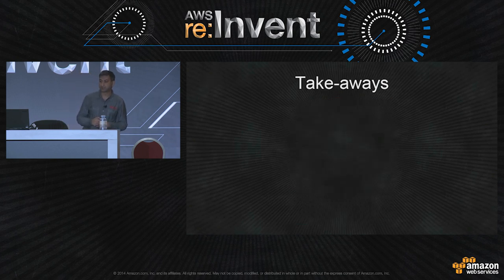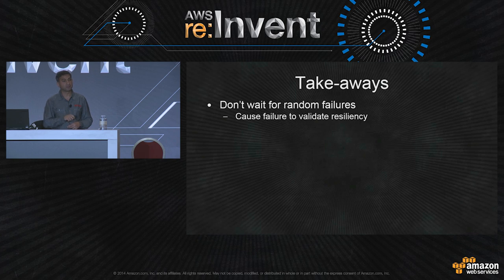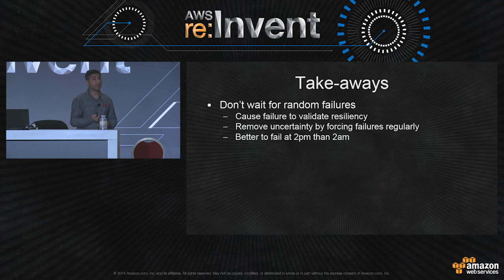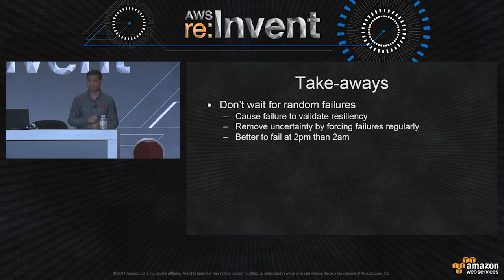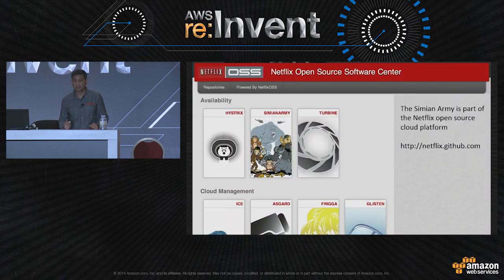What are the key takeaways? You shouldn't wait for random failures — in a distributed system in the cloud, random failures will occur. You should cause these failures to validate resiliency. Remove uncertainty by forcing failures regularly and constantly ensure that your system is resilient. It's better to fail at 2 p.m. rather than 2 a.m. — you don't want an outage at 2 a.m. where you're scrambling to wake everybody up to fix the problem. It's better to have people awake and ready when needed. Always test design assumptions by stressing them. Embrace failure — failure will happen, so be prepared. A lot of our Simian Army components and building block systems are open sourced; you can leverage those.